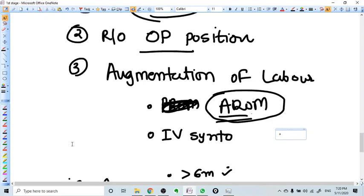When you call it arrest, first of all you need to remember this. Cervical dilatation should be at least more than 6 cm.